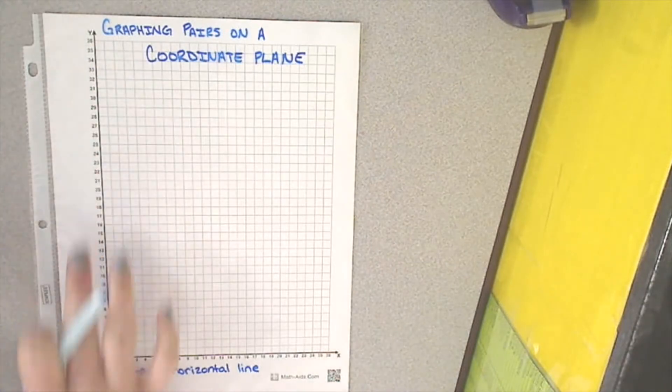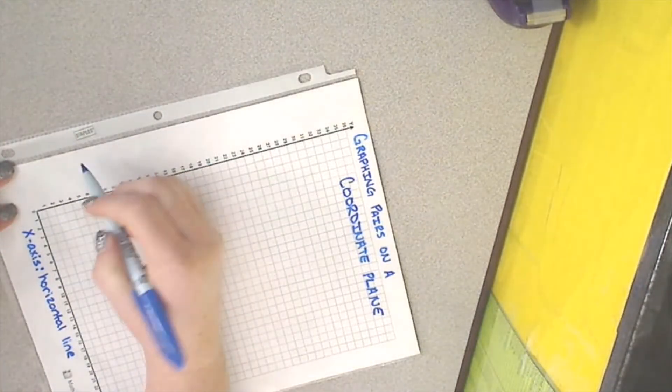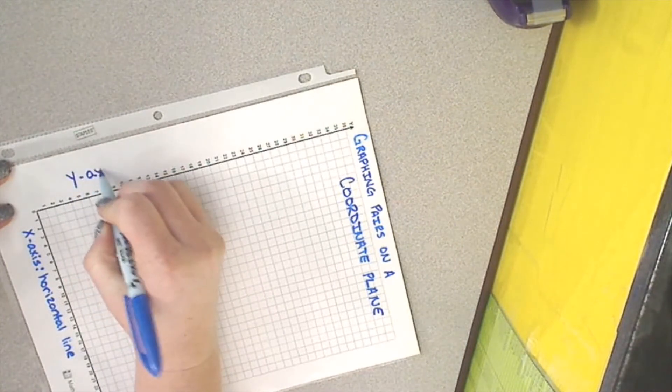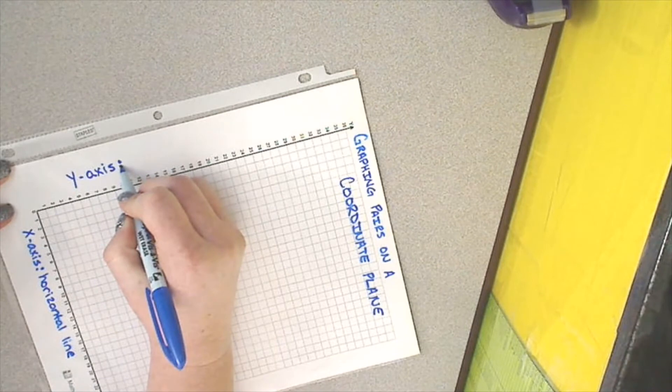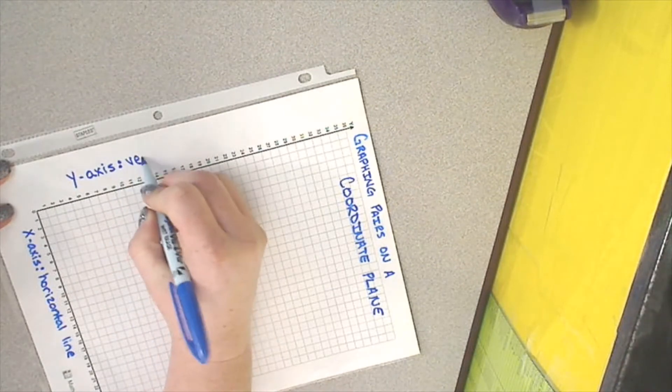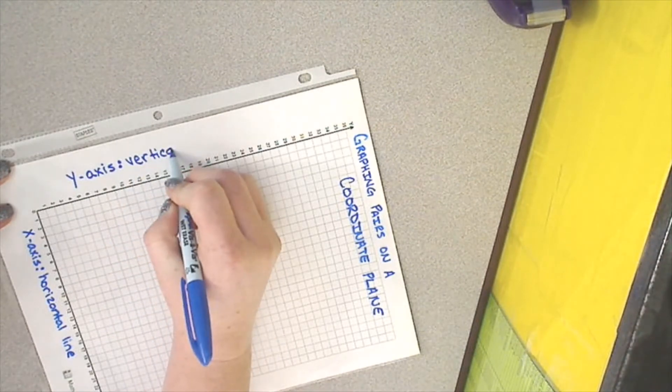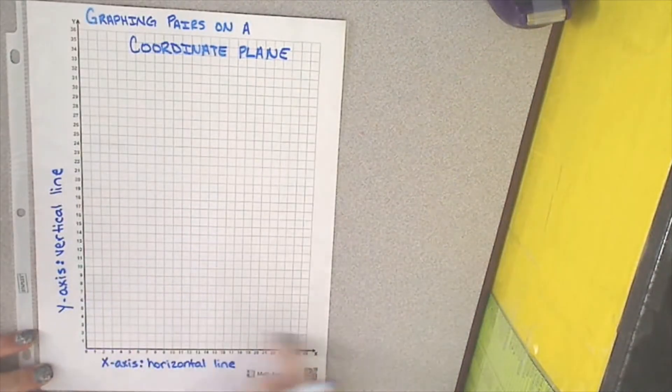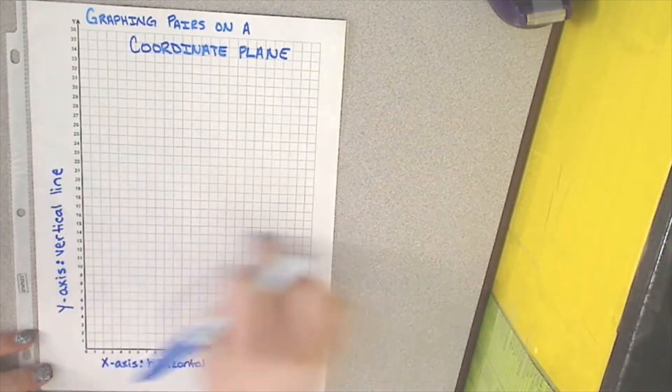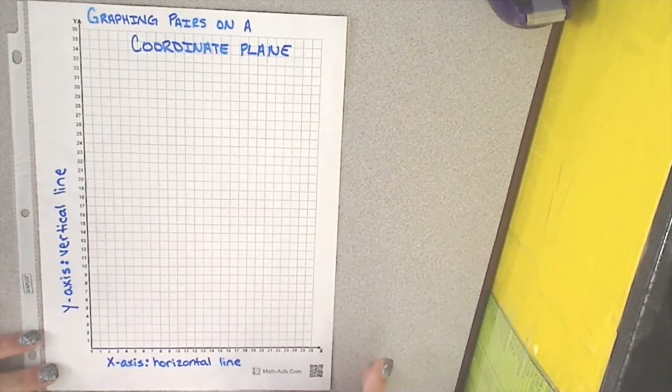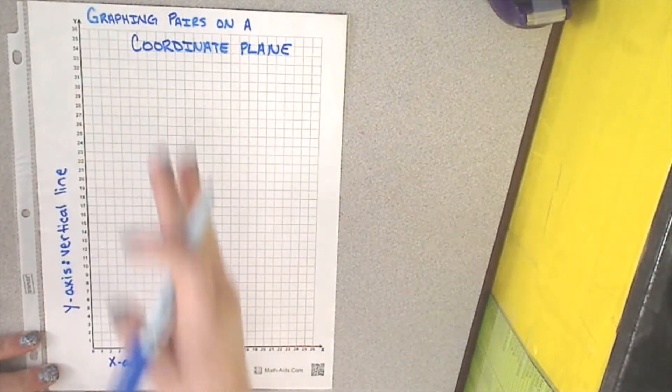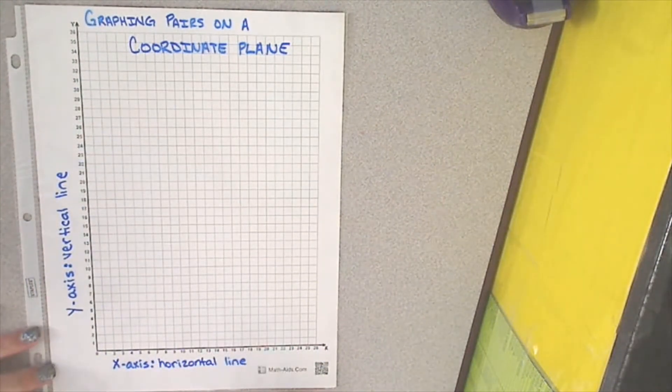Now, we need to label our y-axis. So, I'm going to label this our y-axis, which is always the vertical line. This means that every horizontal line on a coordinate graph is always going to be part of the x-axis. Every vertical line on a coordinate graph is going to be our y-axis.